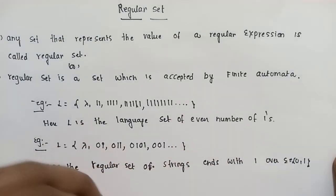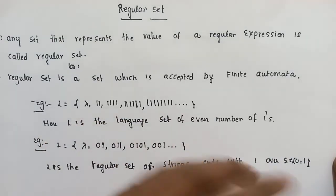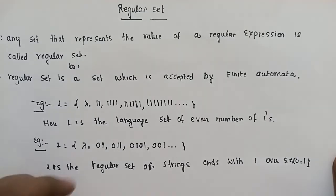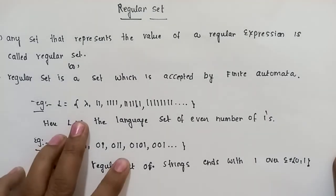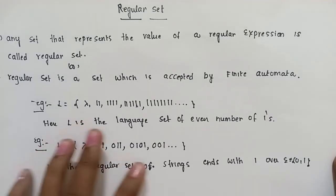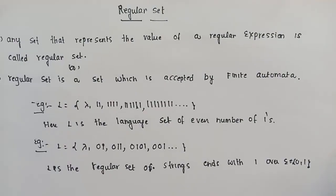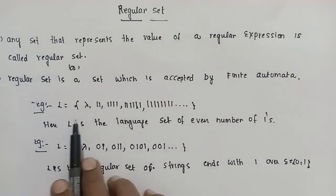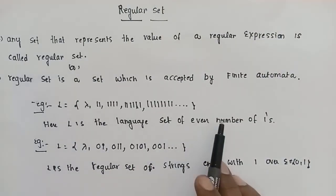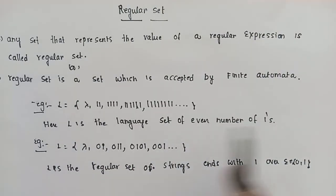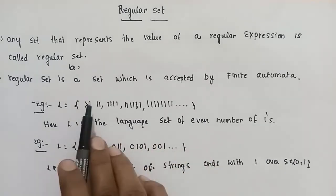A regular set is accepted by finite automata. Suppose, for example, L is a language — a set of even number of 1s. So the even number of 1s forms a set.